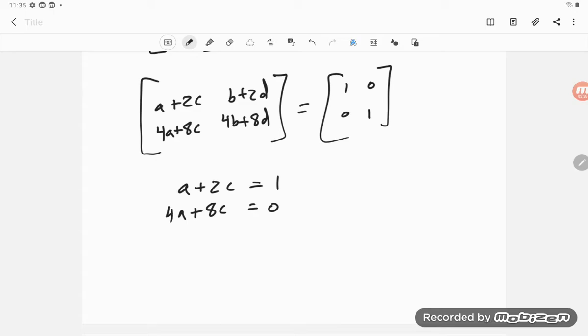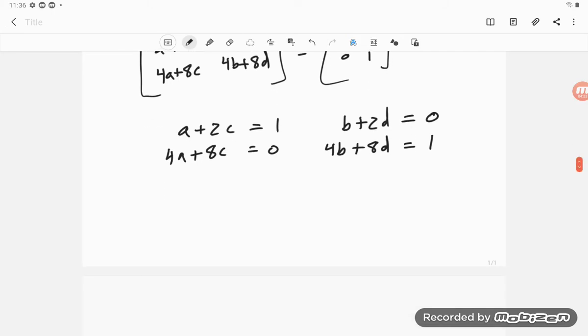And then we get a very similar situation: b plus 2d is equal to 0 and 4b plus 8d is equal to 1. So those are two systems of equations.